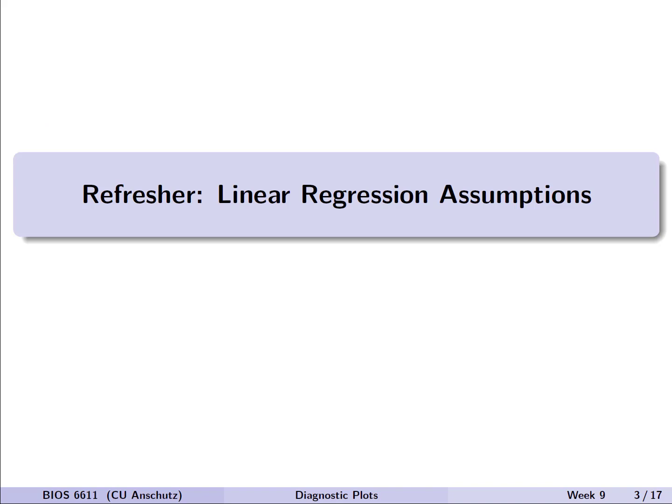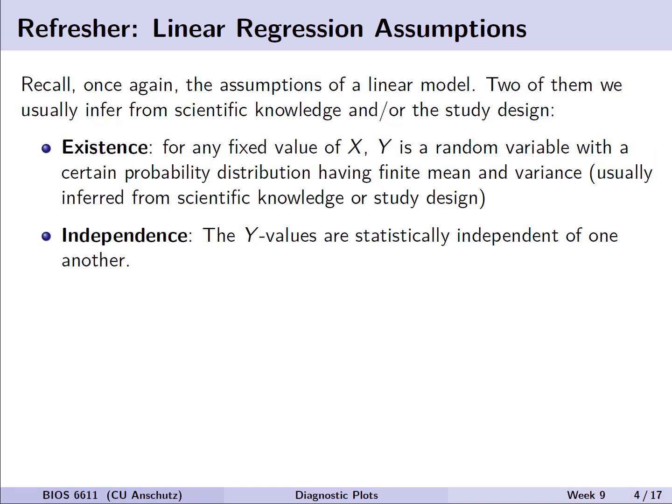So let's start with a refresher of our assumptions. There are five generally speaking assumptions of a linear model, and two of them we generally infer from scientific knowledge or the study design. For example, that assumption of existence — that for any fixed value of x, y is a random variable with a certain probability distribution having a finite mean and variance. This is something we infer from our scientific knowledge, collaborators, or the study design.